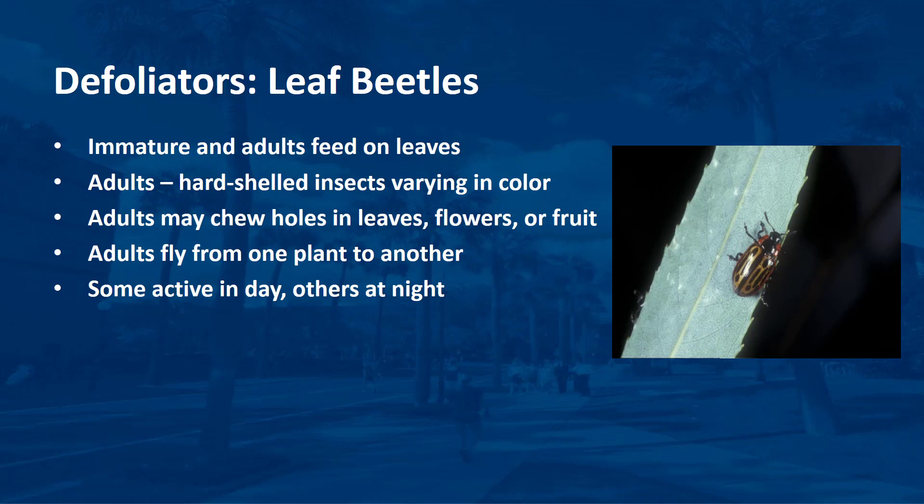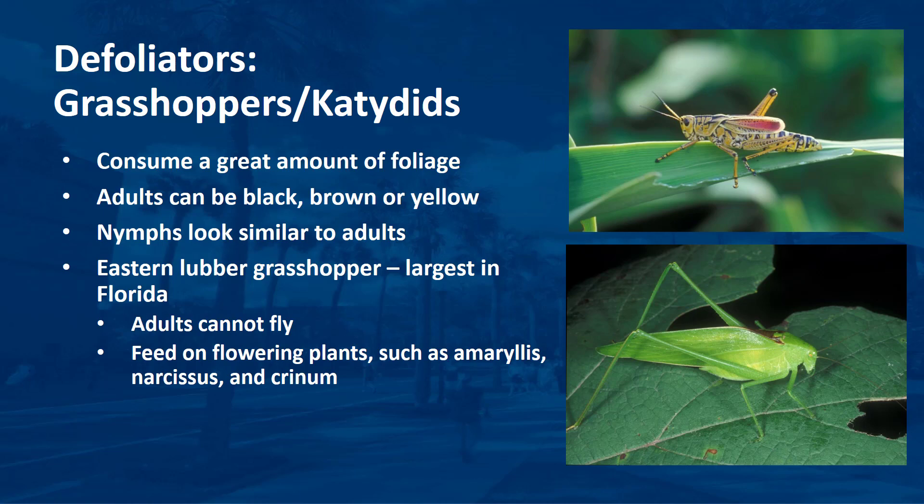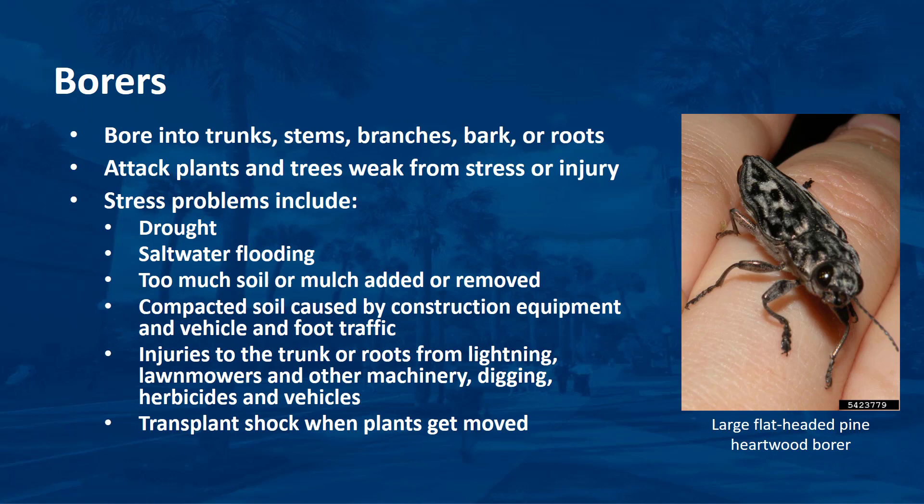Some immature and adult beetle species will also feed on leaves. Adult beetles are hard-shelled insects varying widely in color, including black, brown, and brightly colored. Adults may chew holes in leaves, flowers, or fruit. Because they can fly, adult beetles move from plant to plant. Some are active in the day, others at night. Grasshoppers and katydids sometimes consume a great amount of foliage on ornamental plants. Some adults can be black, brown, or yellow with varying patterns on their wings. Nymphs have a similar appearance to adults but are smaller. The eastern lubber grasshopper is the largest grasshopper in Florida — adults can grow longer than 2.5 inches. They have short wings and cannot fly, and will often invade residential areas and feast on flowering plants, especially amaryllis, narcissus, and crinum.